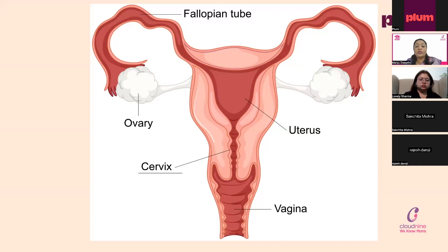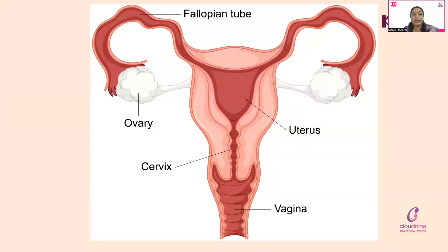The cervix can be visualized through the vagina. If I put a speculum — an instrument into the vagina to open up the walls — then the tubular structure I will be seeing through the vagina will be the cervix. The cervix is interconnected to the uterus; the uterus has two arms which are the tubes, and they are touching the ovaries. This is the female reproductive system.